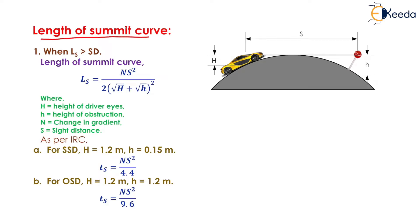To find the length of summit curve: Case 1 — when length of summit curve (L) is greater than sight distance (S): L = NS² / (√H + √h)², where H is the height of driver's eye, h is the height of obstruction, N is the change in gradient, and S is the sight distance. As per IRC for SSD: H = 1.2 m, h = 0.15 m, giving L = NS²/4.4. For overtaking sight distance: H = 1.2 m, h = 1.2 m, giving L = NS²/9.6.